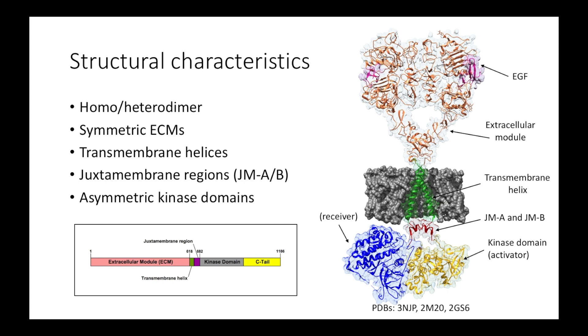The extracellular module participates symmetrically in dimerization. In contrast, the kinase domains of both monomers asymmetrically dimerize. In other words, one kinase domain acts as the activator, and the other acts as a receiver and becomes activated. A normal EGFR receptor by itself has no significant kinase activity, as its kinase domain must be activated by a dimerization partner. Dimerization is influenced by contacts throughout the entire monomer between the ECMs, the transmembrane helices, the juxtamembrane latches, and the kinase domains.